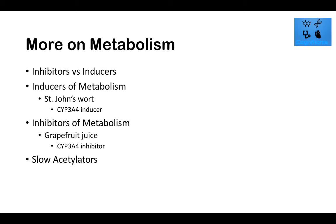Grapefruit juice is probably the most commonly known inhibitor — it inhibits cytochrome CYP3A4. St. John's Wort induces CYP3A4, decreasing bioavailability. Grapefruit juice inhibits it, increasing bioavailability. So grapefruit juice would increase the effects of a drug because it inhibits metabolism, meaning more drug remains. This could also be dangerous if someone drinks a lot of grapefruit juice while taking drugs metabolized by CYP3A4.